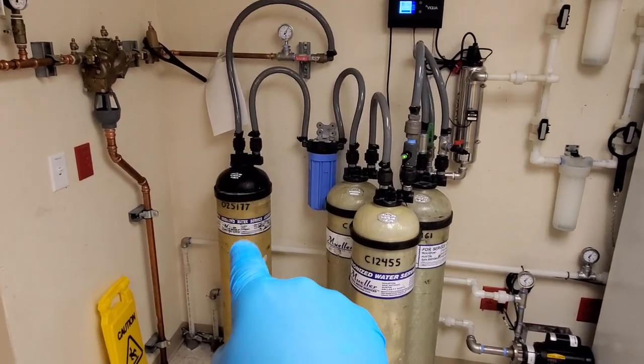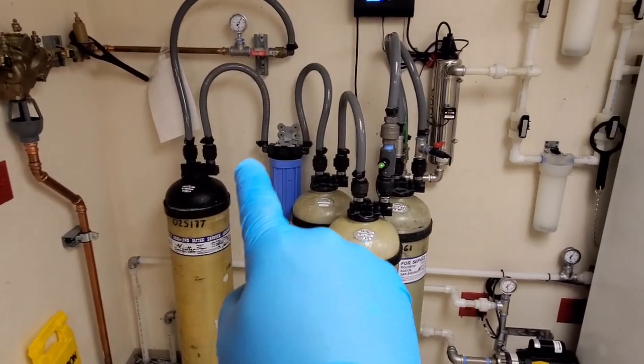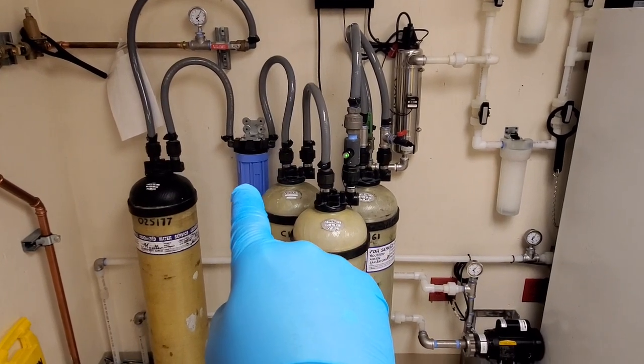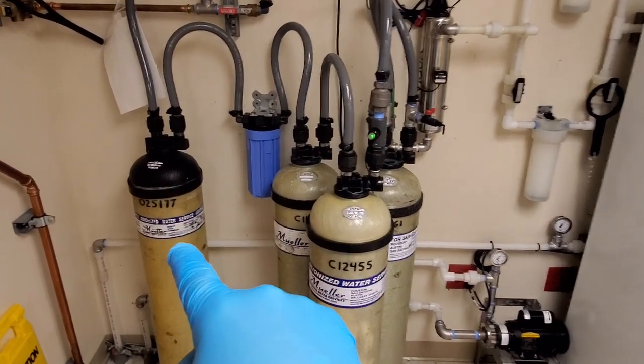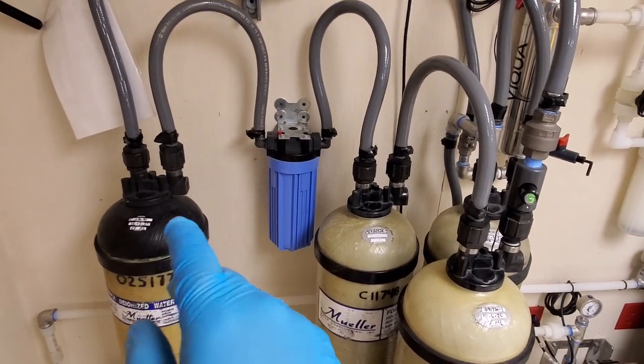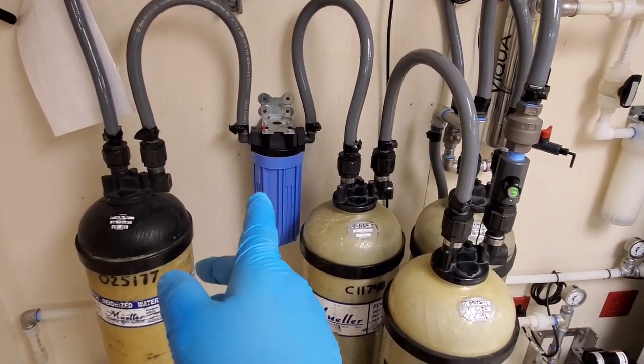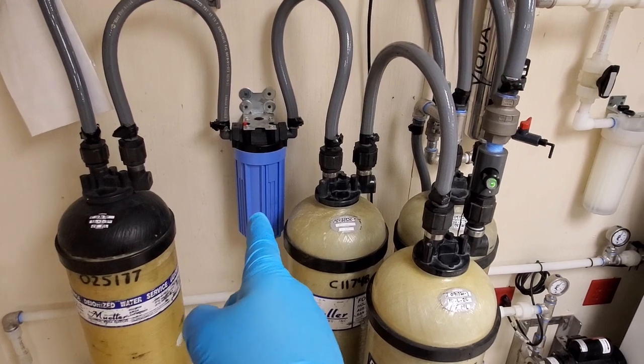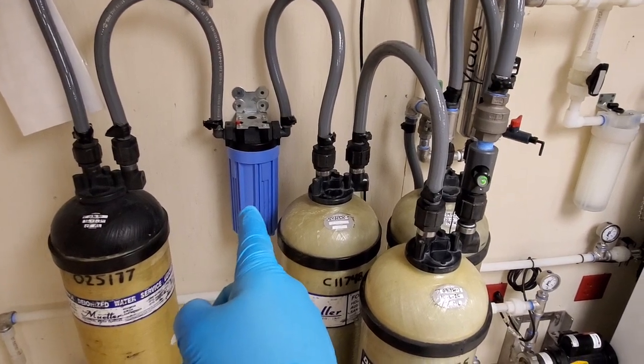It goes into your first stage, which is carbon. And then it goes into a filter after the carbon. Now the carbon removes chlorine and several other things. It's activated charcoal. And then it goes into a primary filter, which is probably a sediment filter.